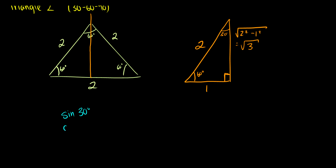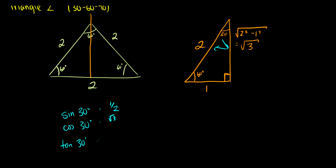Now let's find the trig values for 30°. Sine of 30° is opposite over hypotenuse, which is 1/2. Cosine of 30° is adjacent over hypotenuse, which is √3/2. And tangent of 30° is opposite over adjacent, which is 1/√3.